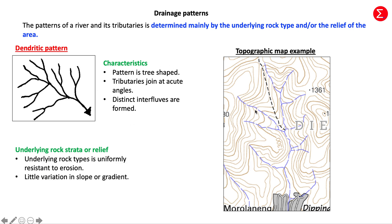Looking at the characteristics: firstly, the pattern is tree-shaped — it looks like the branches of a tree. Tributaries join at acute angles, and distinct interfluves are formed. The underlying rock types are uniformly resistant to erosion, and there's usually little variation in slope or gradient.